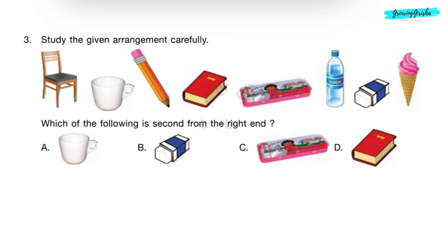Question 3: Study the given arrangement carefully. Which of the following is second from the right end? This is the left end and this is the right end. From the right end, ice cream is the first object and eraser is the second object. So option B, eraser will be the correct answer.